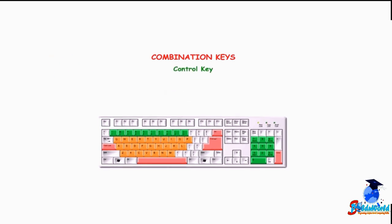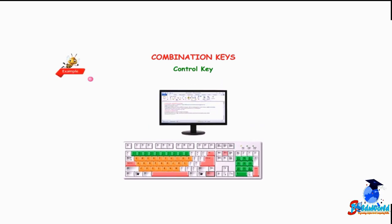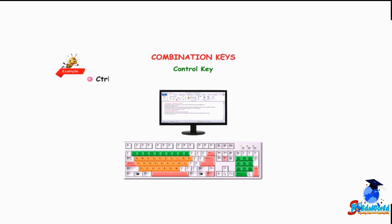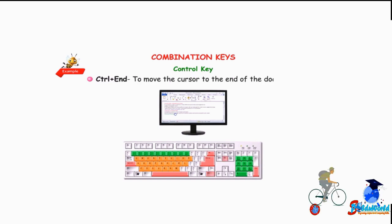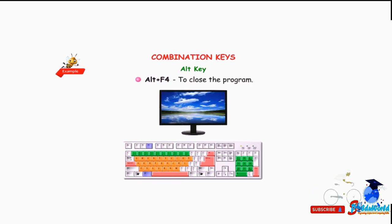Control key — marked as Ctrl, it is used in combination with other keys. For example, Ctrl+Home moves the cursor to the top of a document, and Ctrl+End moves it to the end. Alt key — Alt+F4 closes the program. Ctrl+Alt+Delete is used to shut down a computer.